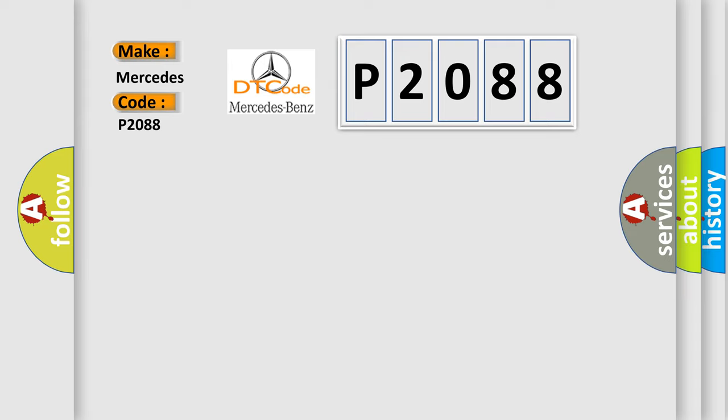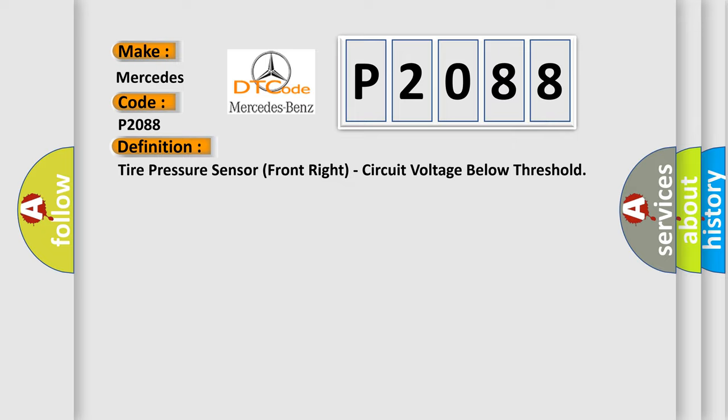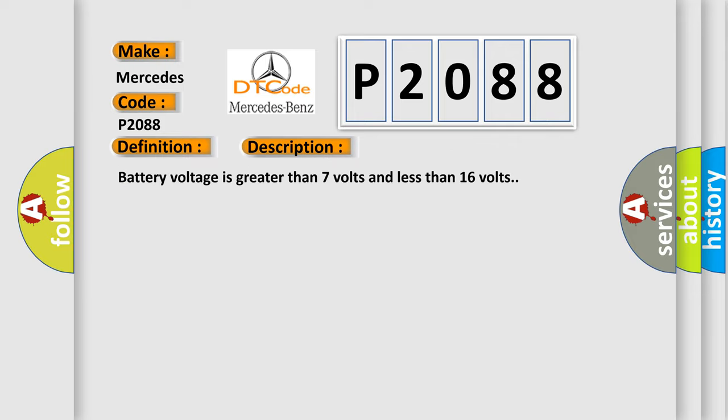The basic definition is tire pressure sensor front right, circuit voltage below threshold. And now this is a short description of this DTC code: Battery voltage is greater than 7 volts and less than 16 volts.